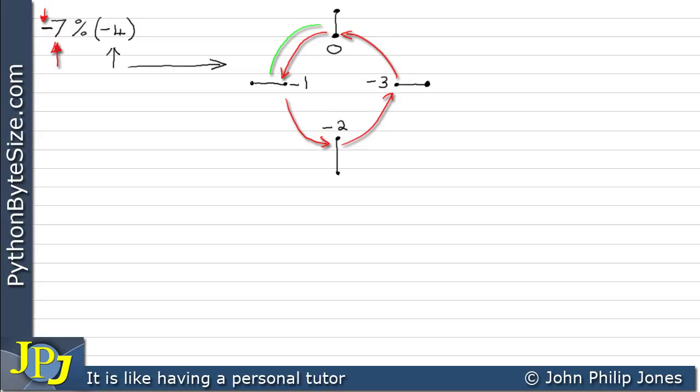So there's the 4th, we get to the origin, there's the 5th step, this is the 6th, and this one here is the 7th step. So now we stop, and we can see we stop at the minus 3, so this equals minus 3.